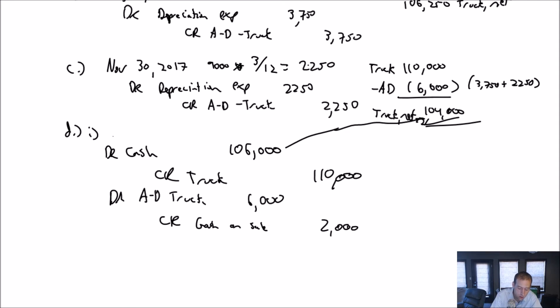That's our journal entry, November 30th, 2017 entry for the sale of the truck. We got paid $106,000 for an asset that we thought was worth $104,000. The journal entry works. We debit cash, get rid of the truck and the accumulated depreciation related to the truck. And the difference goes to gain or loss.